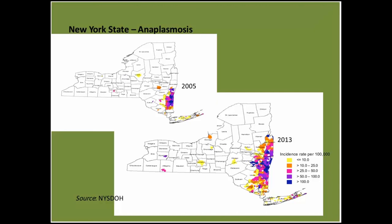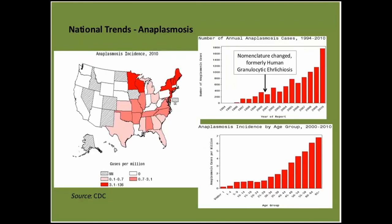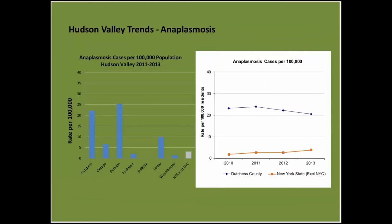For anaplasmosis in New York State, maps show its movement from 2005 to 2013 — following the same trend as Lyme disease, starting to move northward and spreading west. National trends show New York is one of the highest rates in the country, alongside where Lyme disease is prevalent. Annual cases of anaplasmosis — formerly called human granulocytic ehrlichiosis — are steadily rising, and incidence by age group is also moving upward. In the Hudson Valley, Dutchess County has traditionally had one of the highest rates of anaplasmosis cases.